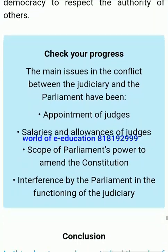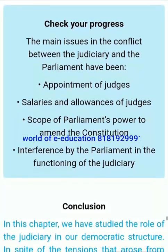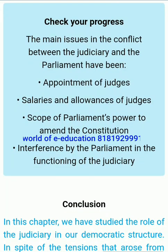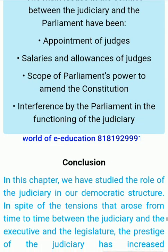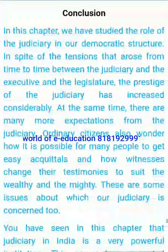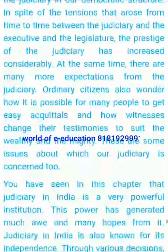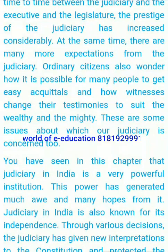The legislatures see judicial criticism and instructions as violating the principle of parliamentary sovereignty. These issues indicate how delicate the balance between the organs of government is, and how important it is for each organ to respect the authority of others. Check your progress: The main issues in the conflict between the judiciary and the parliament have been the scope of parliament's power to amend the constitution and interference by the parliament in the functioning of the judiciary.